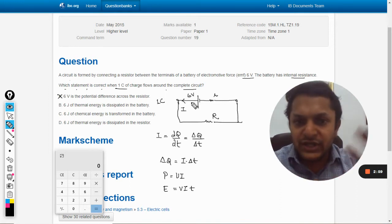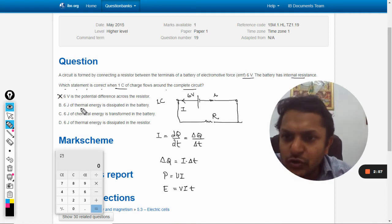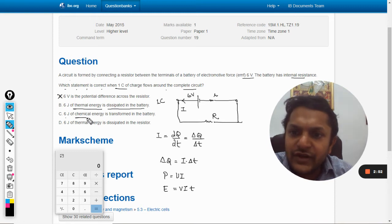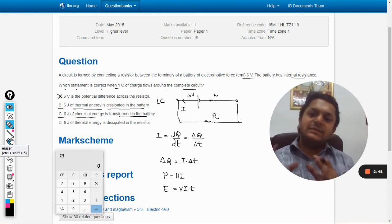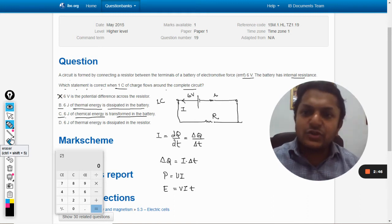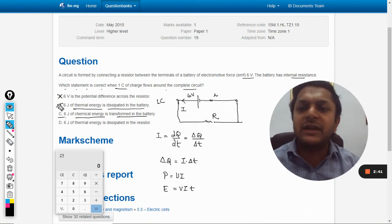Option B: Six joule of thermal energy is dissipated in the battery. Six joule of chemical energy is transformed in the battery. B and C are very similar to each other, but in B he's talking about thermal energy, and we are never using thermal energy in a battery. First of all, in a battery, the chemical energy gets transformed into the electrical energy.